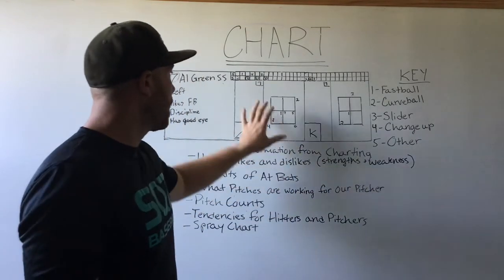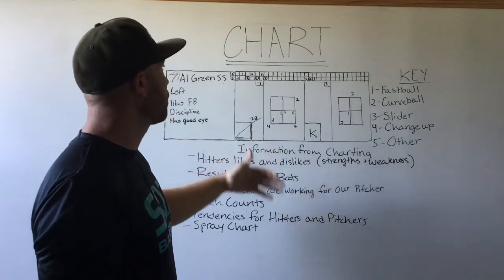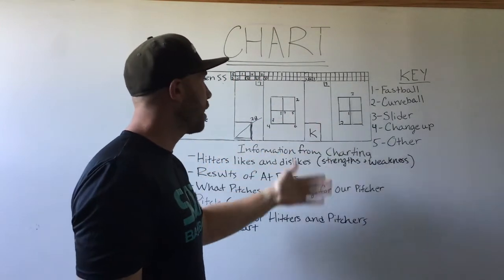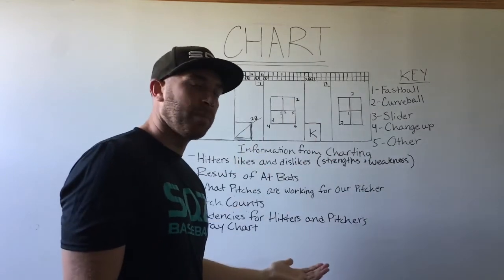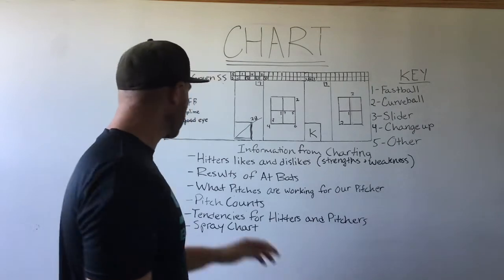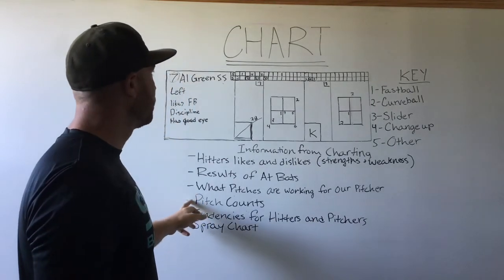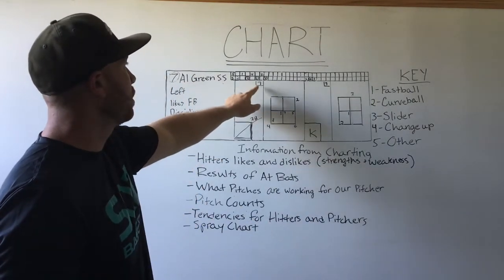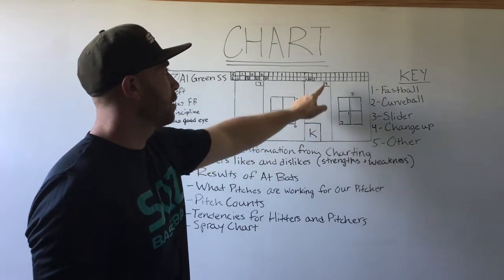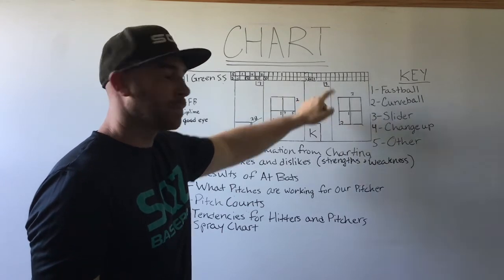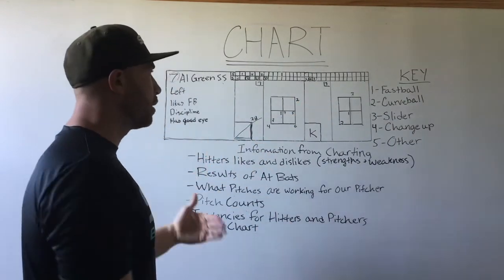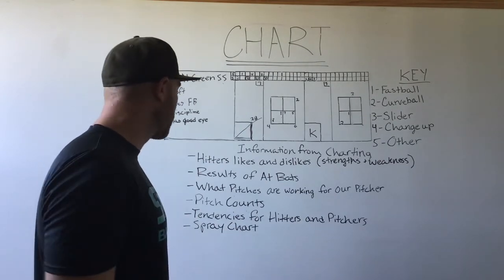What pitches are working for our pitcher? In our first at-bat our pitcher had a hard time throwing off-speed pitches for strikes, and in our second at-bat he did a better job. You can also tell our pitch count: after the first at-bat he threw a total of seven pitches, after the second at-bat he threw a total of three pitches. Throughout the course of the game you can add up all his pitches per at-bat and end up with his total.